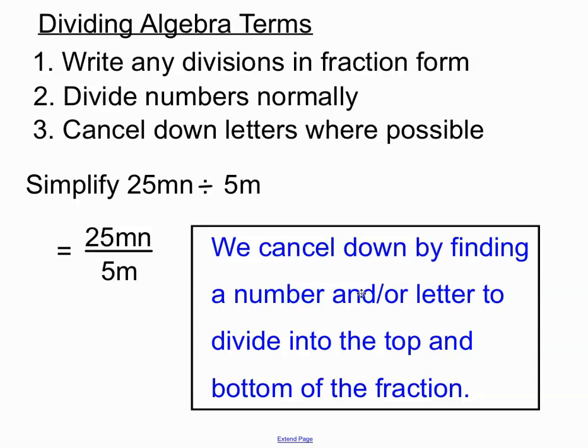When we say we cancel down, we're finding a number and or sometimes a letter to divide into the top and the bottom of a fraction. You know your fraction rules: if you do the same thing to the top and the bottom, you're on safe ground.